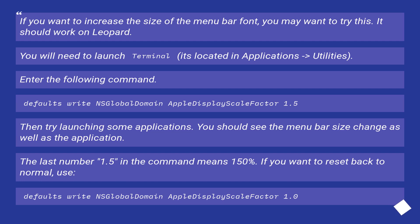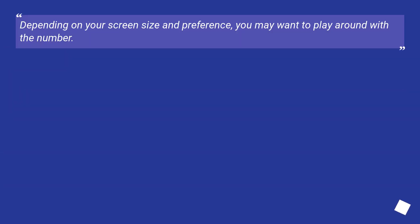Run: defaults write -g AppleDisplayScaleFactor 1.5, then try launching some applications. You should see the menu bar size change as well as the application UI. The last number, 1.5, means 150%. If you want to reset back to normal, use: defaults write -g AppleDisplayScaleFactor 1.0. Depending on your screen size and preference, you may want to play around with the number.